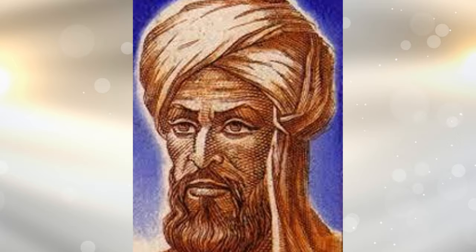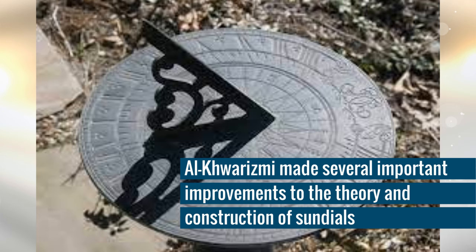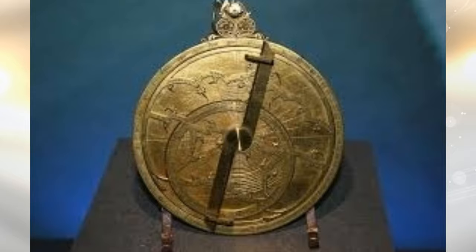Al-Khawarizmi made several important improvements to the theory and construction of sundials which he inherited from his Indian and Hellenistic predecessors. He made tables for these instruments which considerably shortened the time needed to make specific calculations. His sundial was universal and could be observed from anywhere on earth. From then on, sundials were frequently placed on mosques to determine the time of prayer.